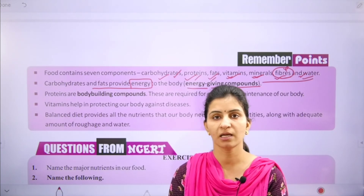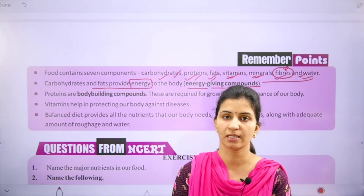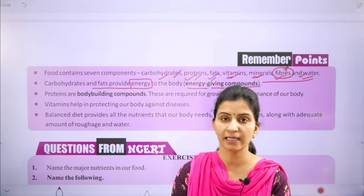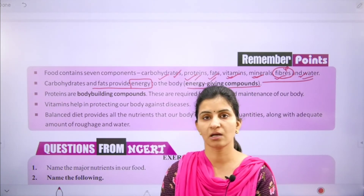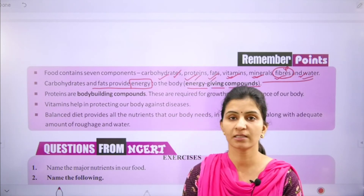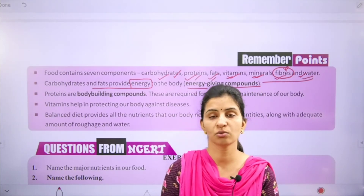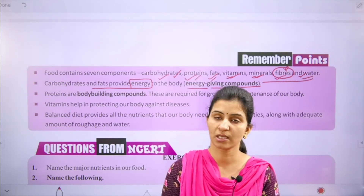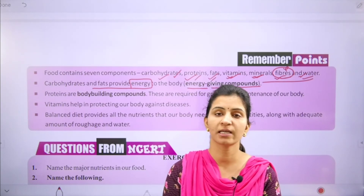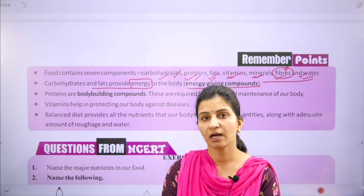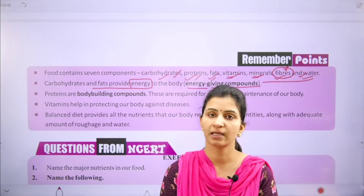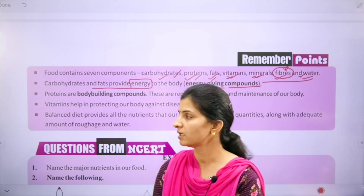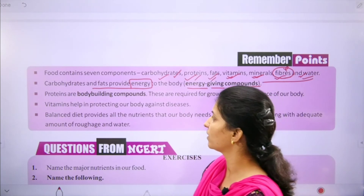A balanced diet should keep our diet balanced, and this varies from person to person. For example, an athlete or labor class has higher energy requirements, so fats like butter and ghee can be consumed. But carbohydrates and proteins are also important — protein is body-building food.